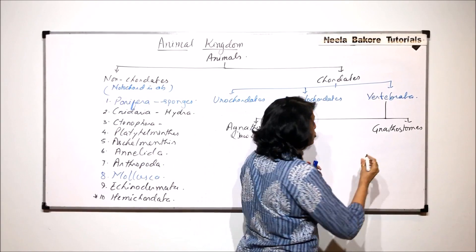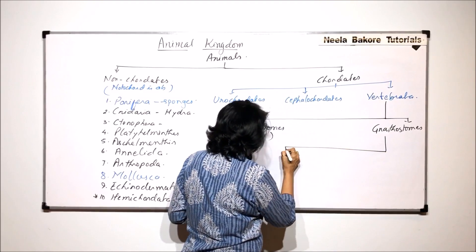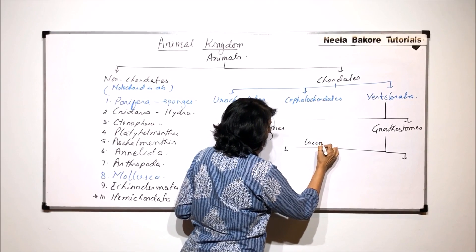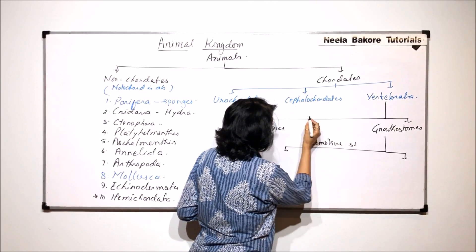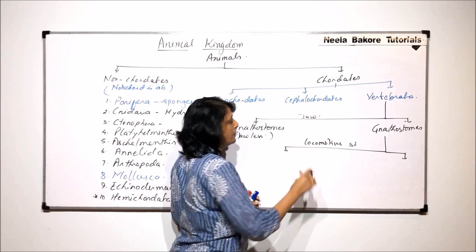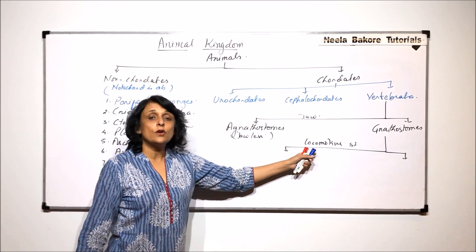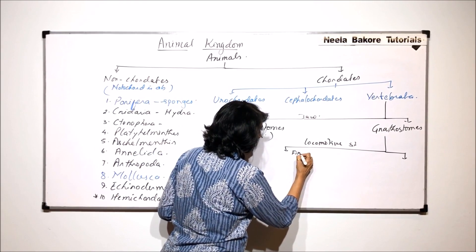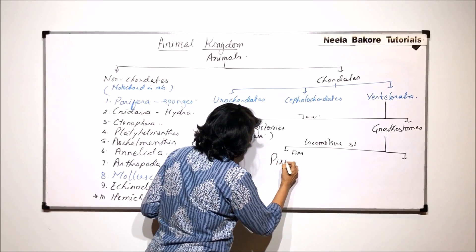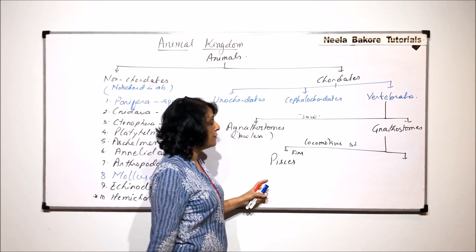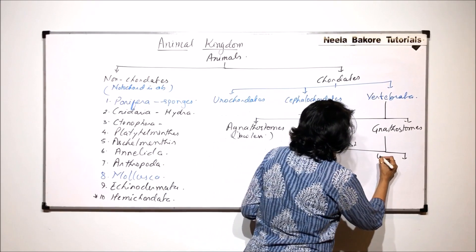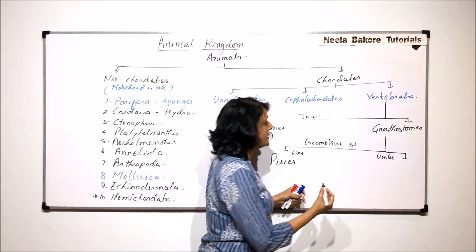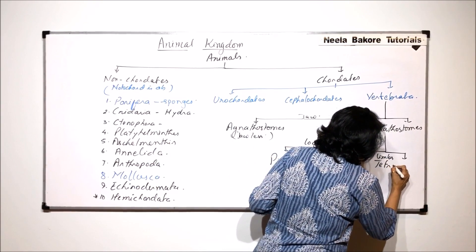Gnathostomes, that means they have jaw. They are further classified on the basis of the locomotive structures. And here we are talking about the presence or absence of jaw. Now, when we talk of locomotive structures, if fins are the locomotive structures, then that group is known as pisces. And if there are limbs which help in locomotion, and these limbs are four, the forelimbs and the hind limbs, then they are known as tetrapoda.